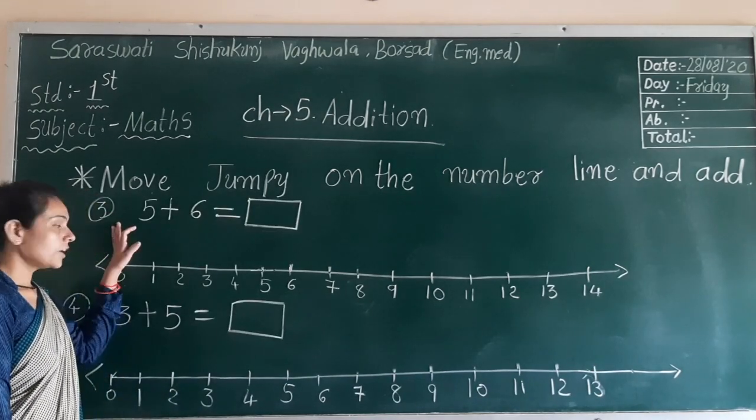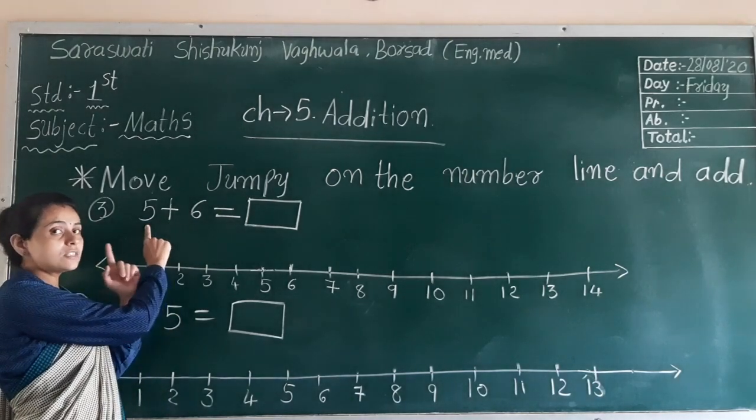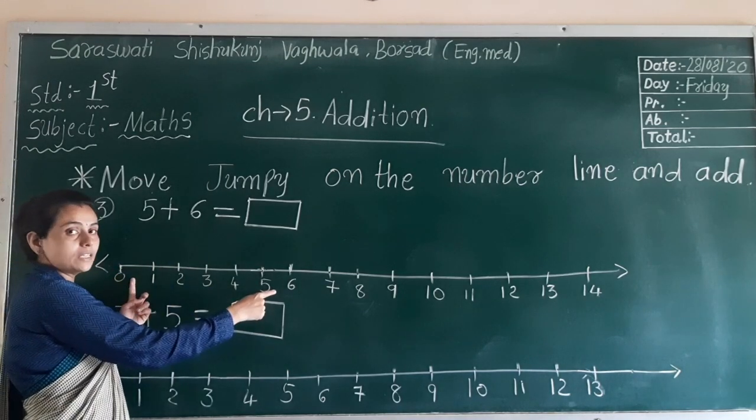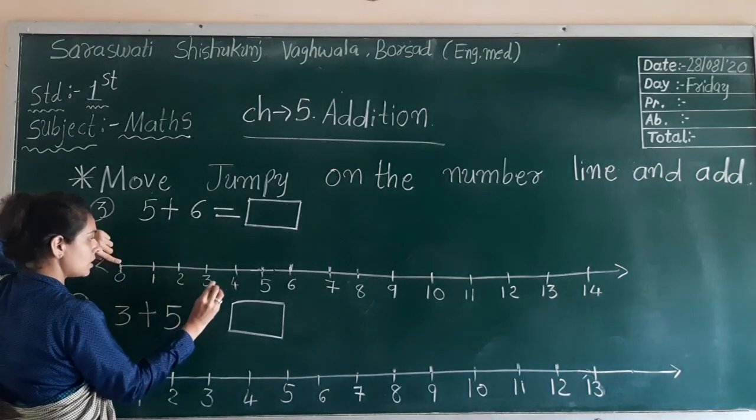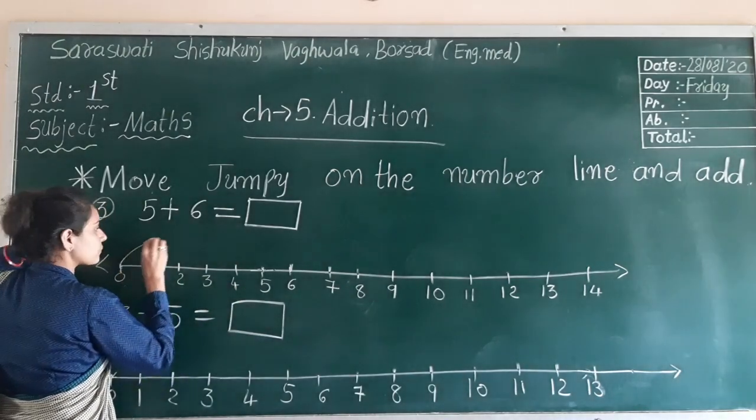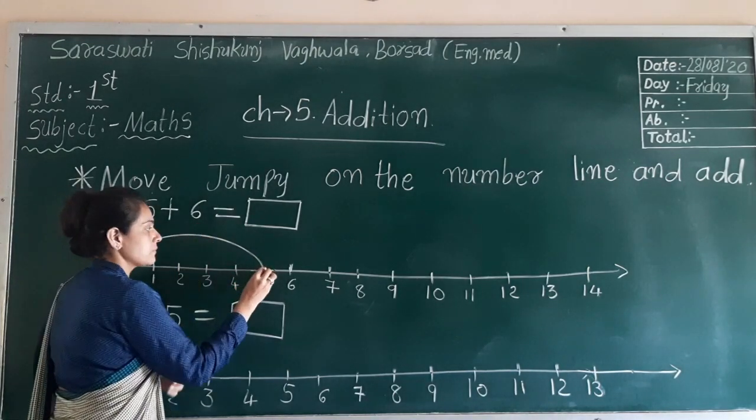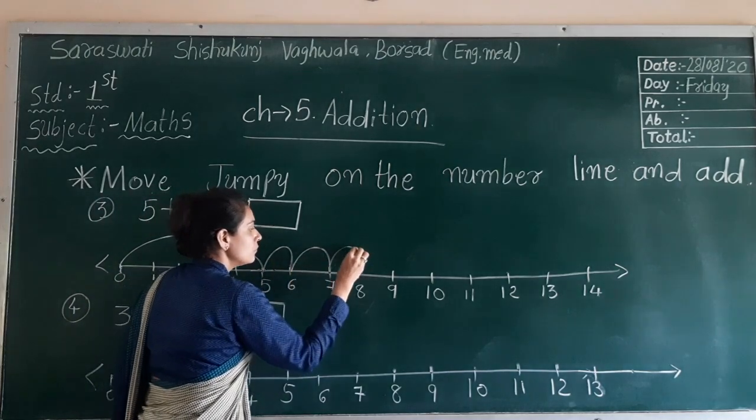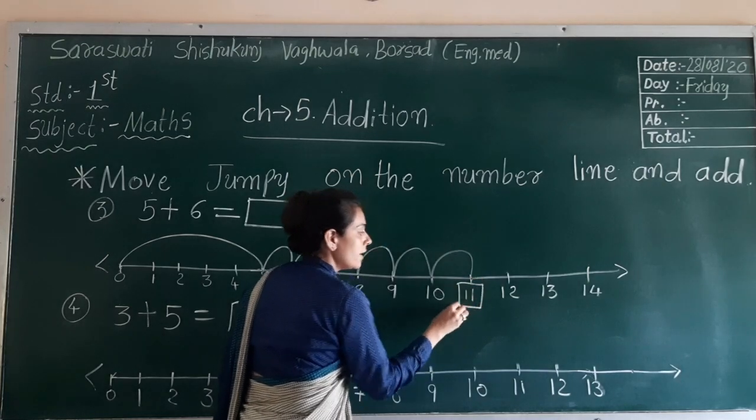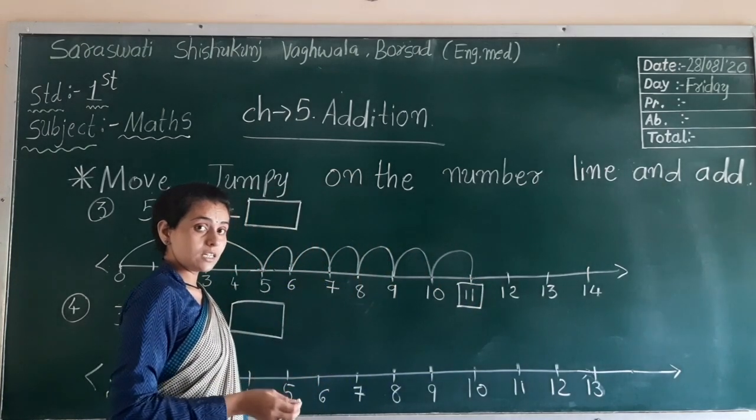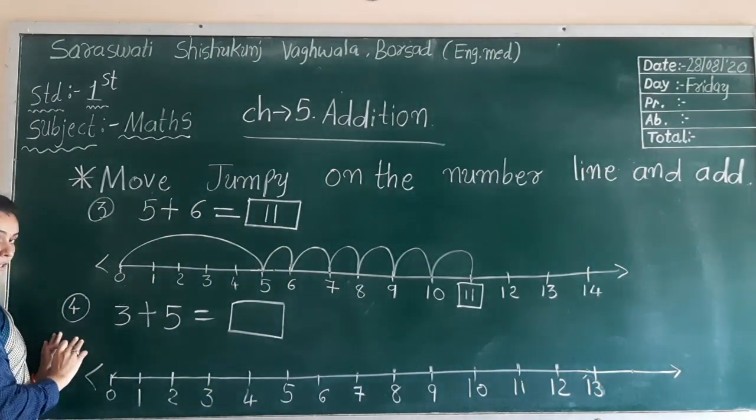Now third number: 5 plus 6. So here 5, so first you have to start from 0 and move to 5. From 0 to 1, 2, 3, 4, 5. Now 6, so you have to take 6 steps: 1, 2, 3, 4, 5, 6. This is your answer. What is your answer? 11.